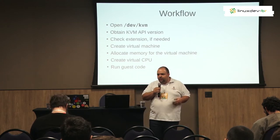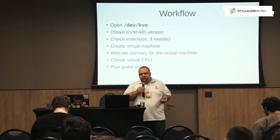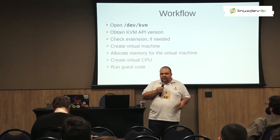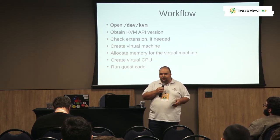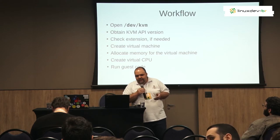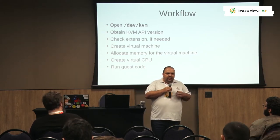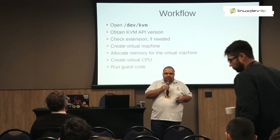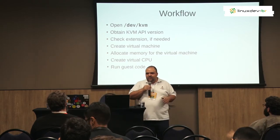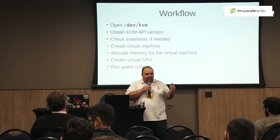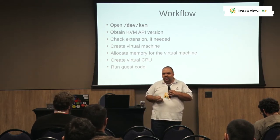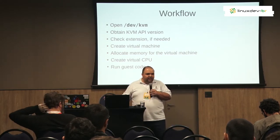The workflow is pretty simple. The program needs to open the KVM device, usually at the standard canonical path /dev/kvm. After obtaining the KVM API version — there are some really old implementations of KVM API since kernel 2.6, when the KVM API was not stable, so they were bumping the KVM API version very commonly. There was some stabilization after that, and it has been stable for about 11 years.